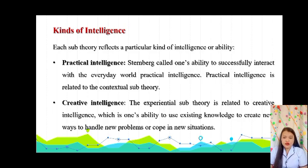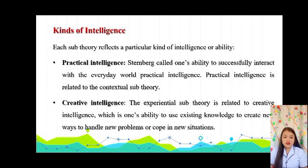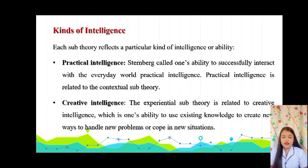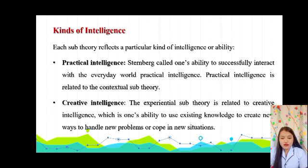Each sub-theory reflects a particular kind of intelligence or ability. There are three types of intelligence: Practical intelligence, Creative intelligence, and Analytical intelligence. Sternberg called one's ability to successfully interact with the everyday world Practical intelligence. Practical intelligence is related to the Contextual sub-theory, and people with it are especially adept at behaving in certain external environments.